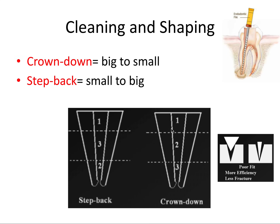From there, you move sequentially down from big files to small files — you start with a large file like a 35 or 40 at 0.06 taper and run the file into the orifice until you get resistance, then use successively smaller files until you reach the apex. To know when you've reached the apex, you combine a pre-operative X-ray, an apex locator which uses electricity, and/or an intraoperative X-ray with a file in the canal to verify your estimated length.